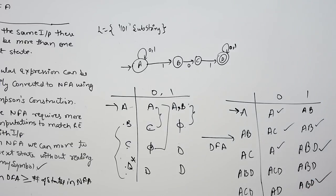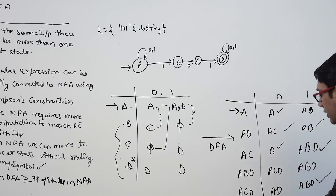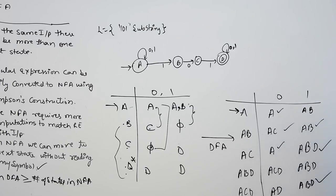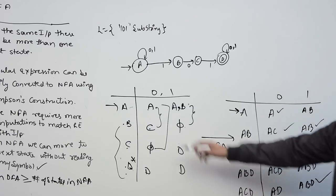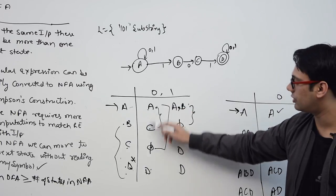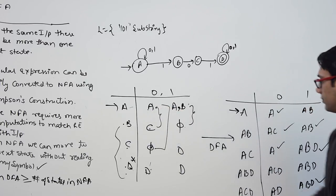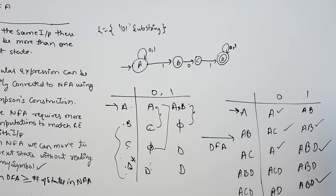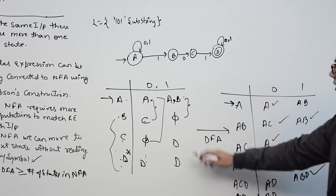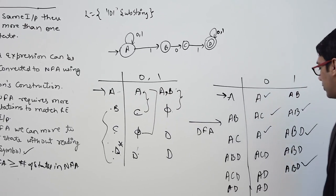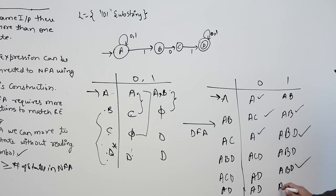We have defined ABD but not AD. For state AD, take the union of transitions from A and D. On 0, we get AD. On 1, we get ABD. All states are now defined.